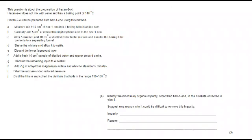Let's move on to part E. Identify the most likely organic impurity other than hex-1-ene in the distillate collected in step J. Suggest one reason why it would be difficult to remove. So we have got hex-2-ol that we're starting with, and we are preparing hex-1-ene. The impurity is likely to be hex-1-ol. And the reason it would be difficult to remove it is that we have got a similar boiling point. And that means we can't separate it using fractional distillation.